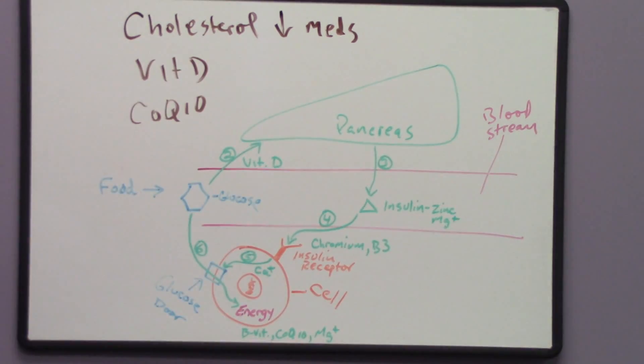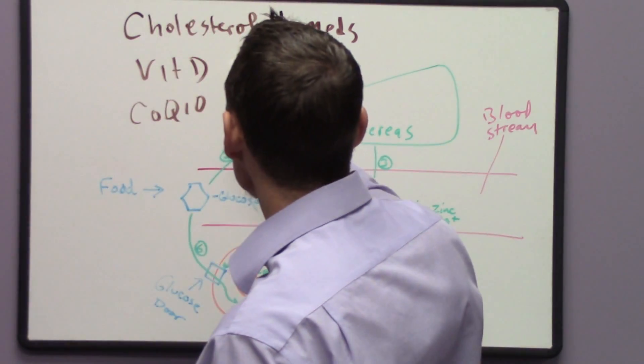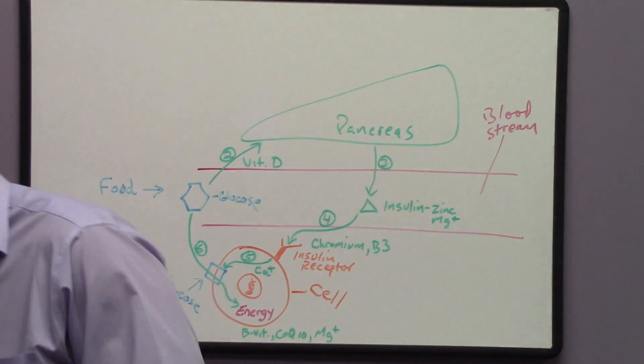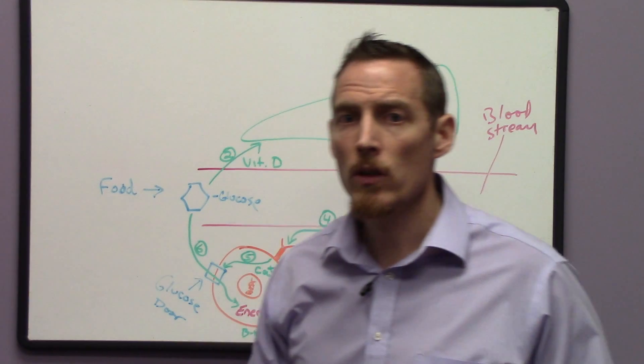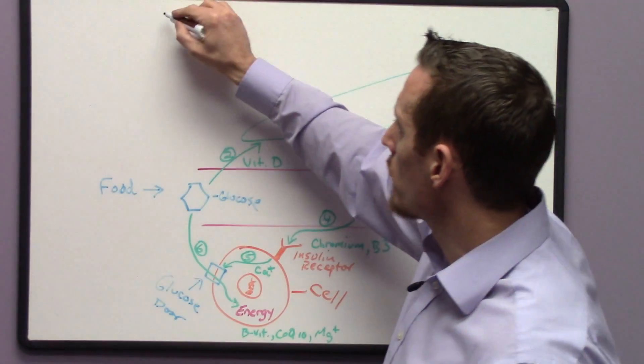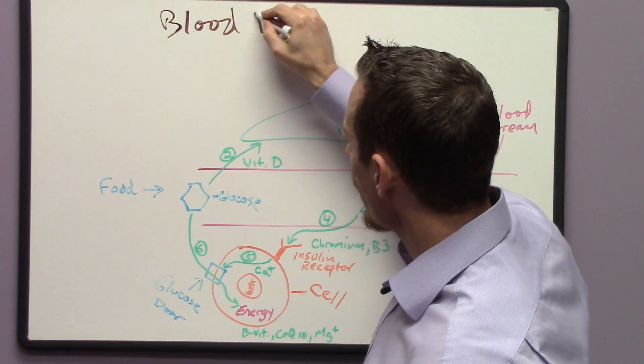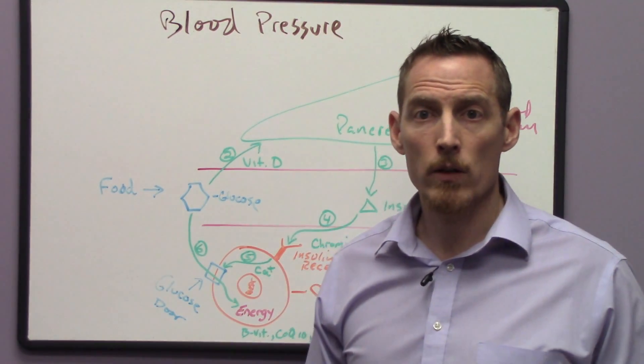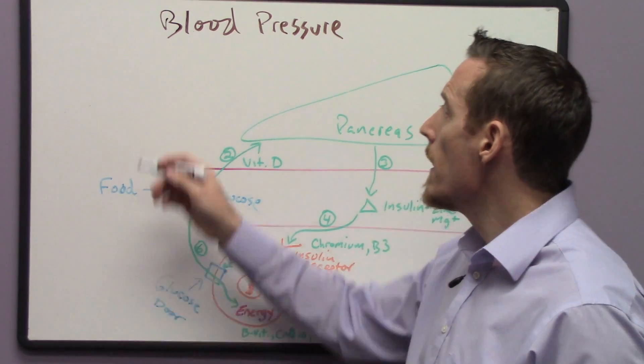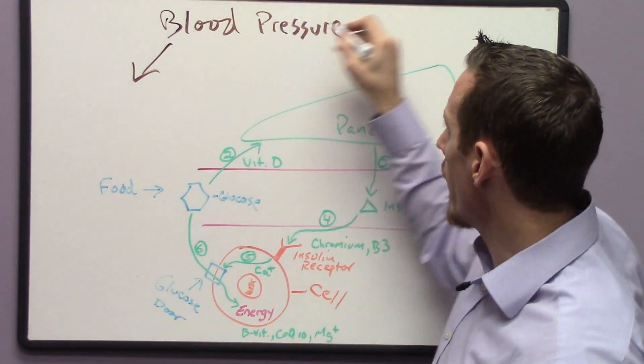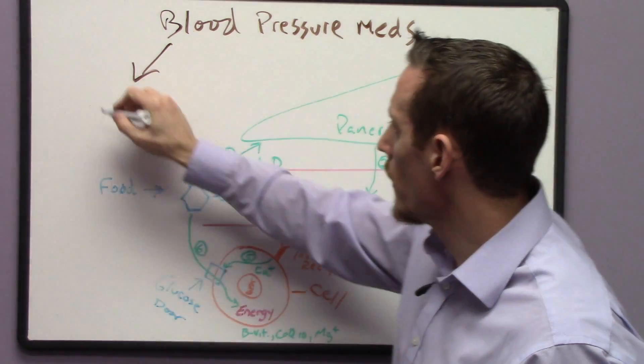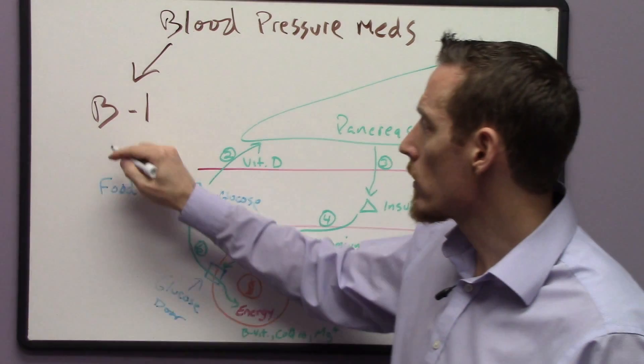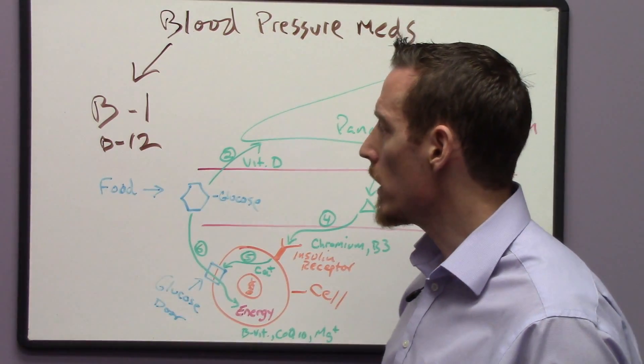So we've got blood pressure lowering drugs, we've got cholesterol lowering drugs and the other class of drug that's commonly used or the other type of medication that's commonly used in patients that have blood sugar problems all have to do with blood pressure, right? Because what doctors, cardiologists typically try to do is reduce the risk factors involved with cardiovascular disease, diabetes. So the blood pressure meds will block many of the different B vitamins but B1 is one of the main ones.